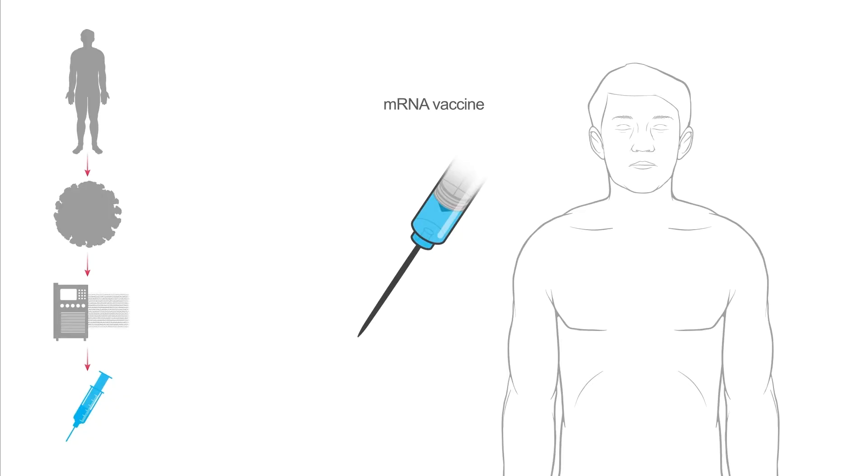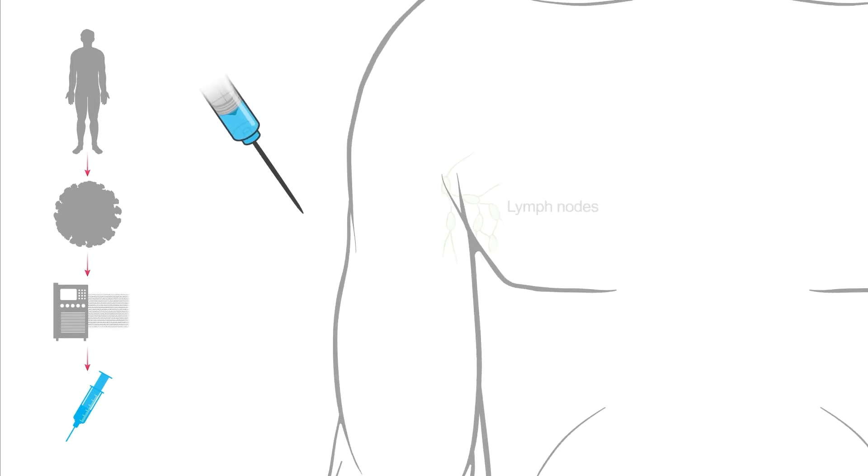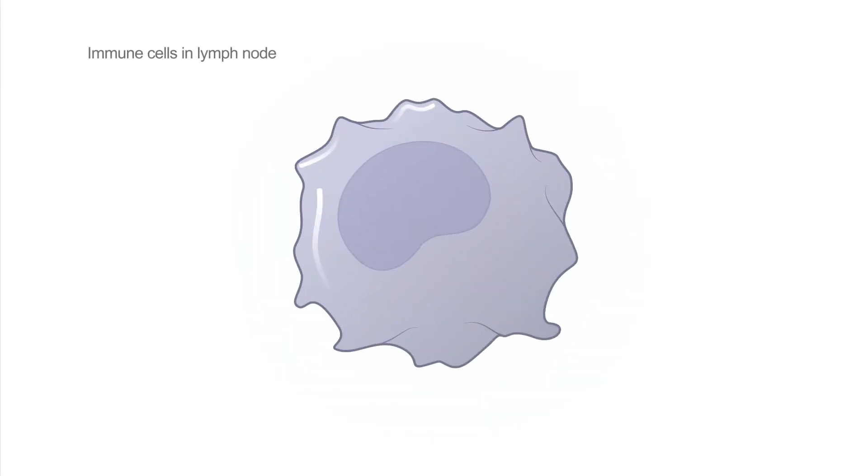So when you get your vaccine in your deltoid muscle, the lipid nanoparticle also helps it target to the lymphatics. And once the lymphatics drain into that lymph node, that's really where there's a high concentration of antigen presenting cells. And those are really the cells that are the target of this vaccine.